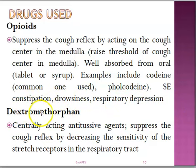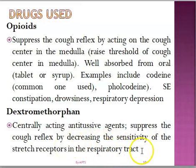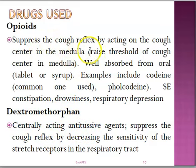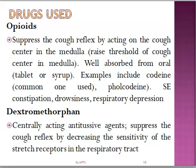Dextromethorphan is also a centrally acting antitussive. It suppresses the cough reflex by decreasing the sensitivity of stretch receptors in the respiratory tract. It is commonly used because, although it acts by a similar mechanism to codeine, it has less addiction potential. It is available in combination in many pharmacy syrups, which may contain dextromethorphan or codeine.